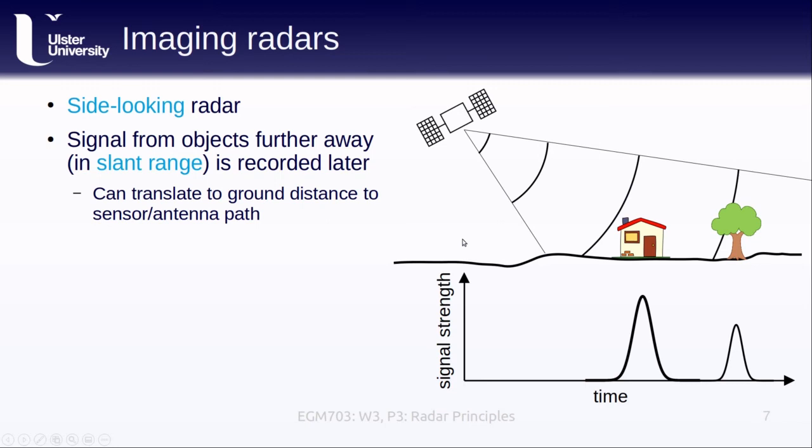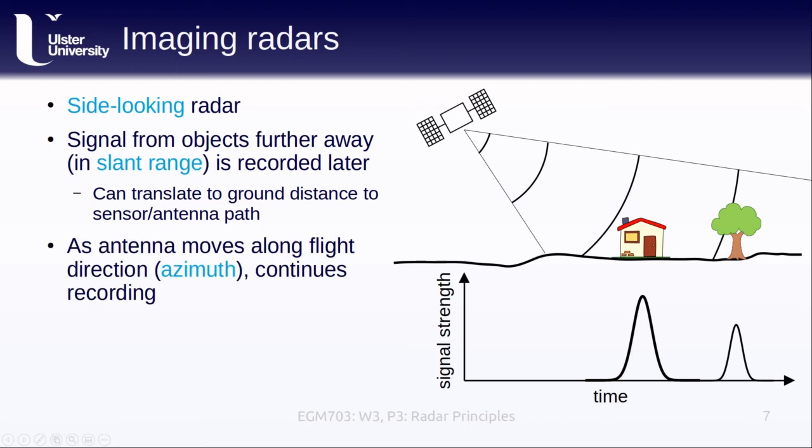As the antenna moves along the flight direction or azimuth, it continues recording which means that we can effectively build an image one line of pixels at a time.